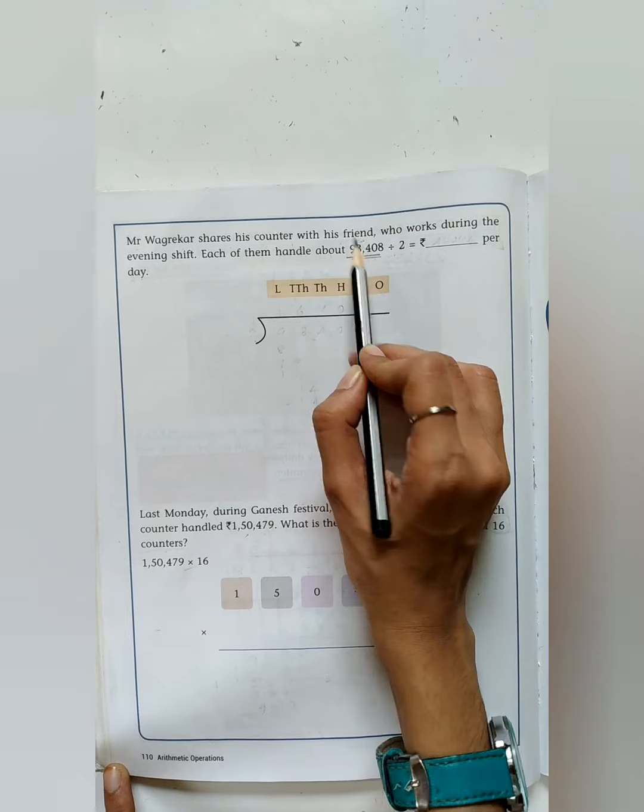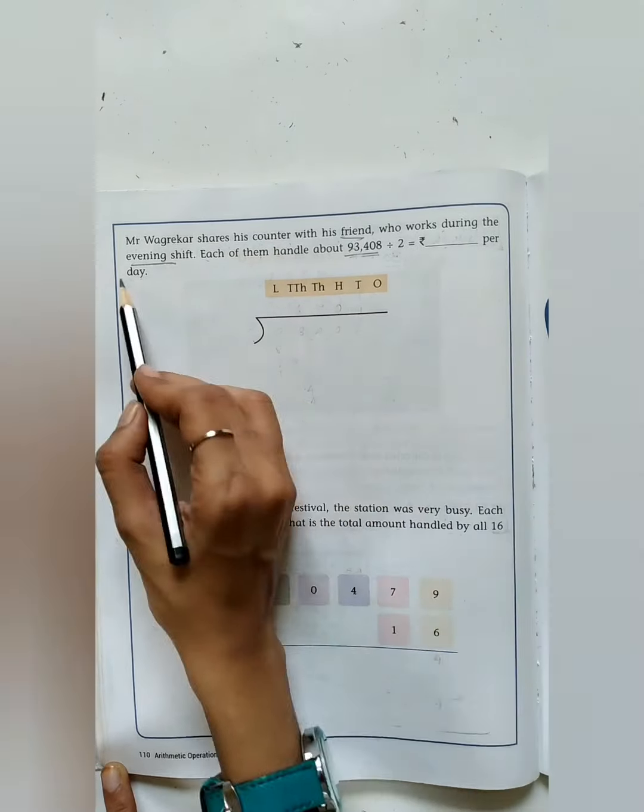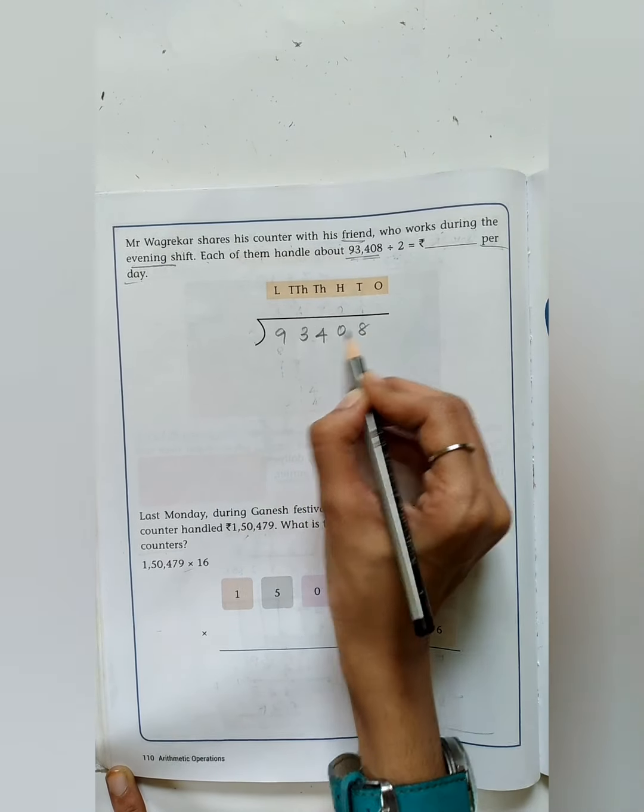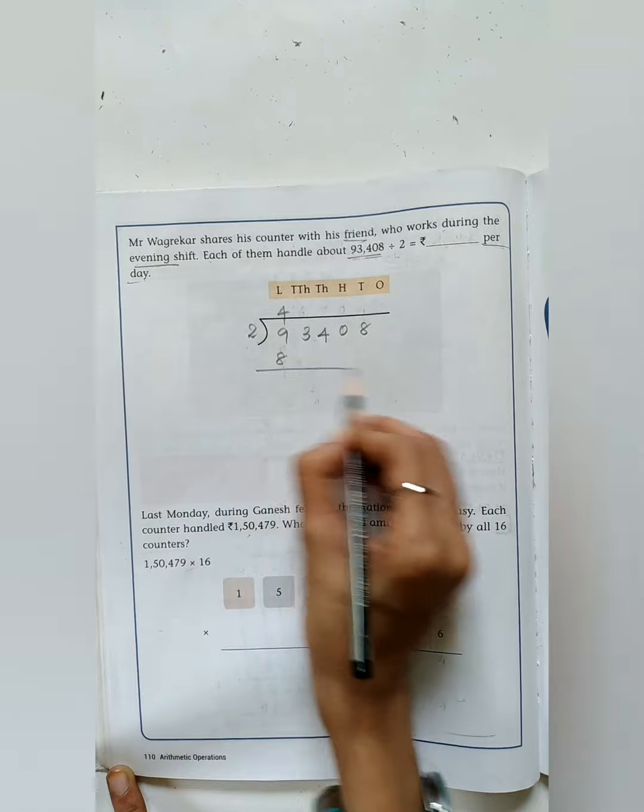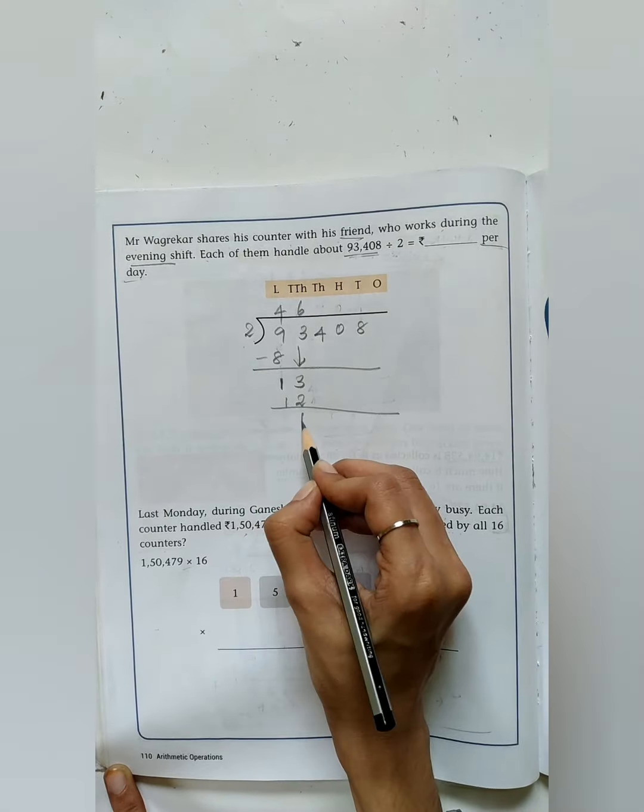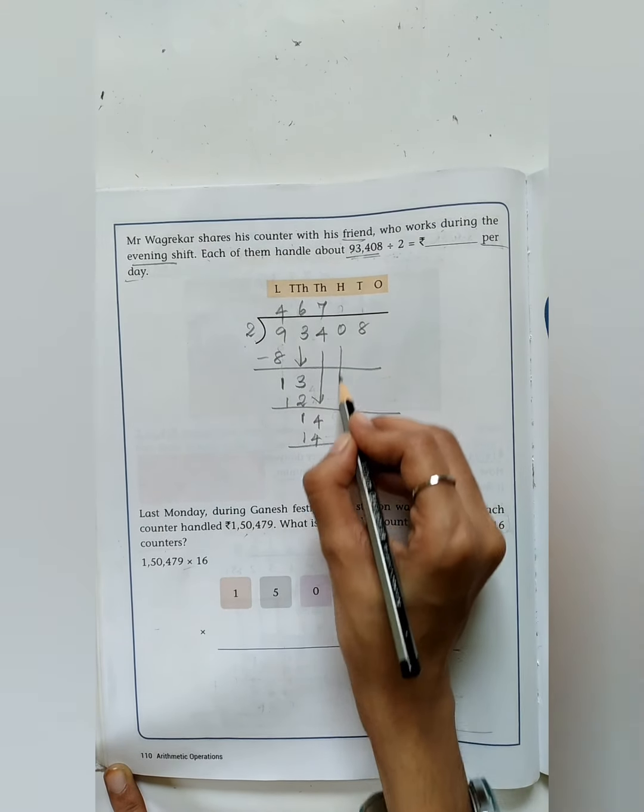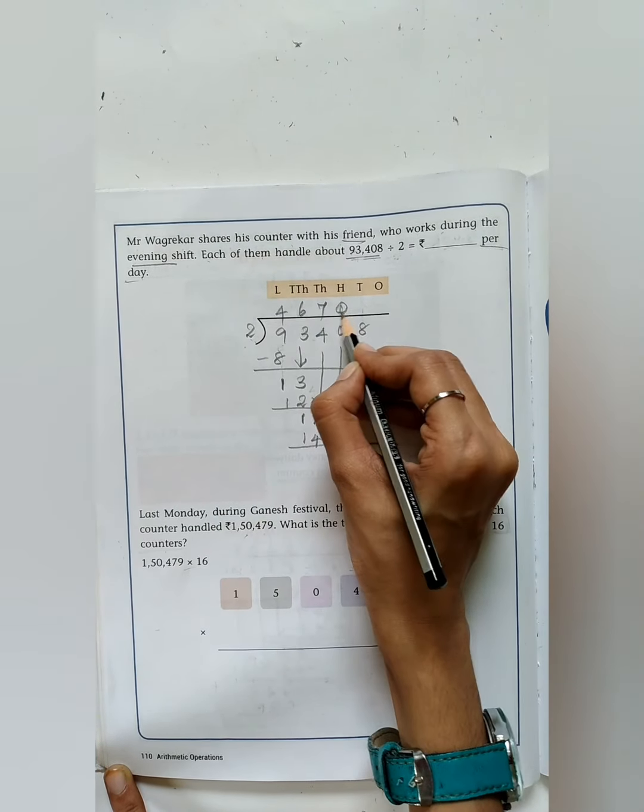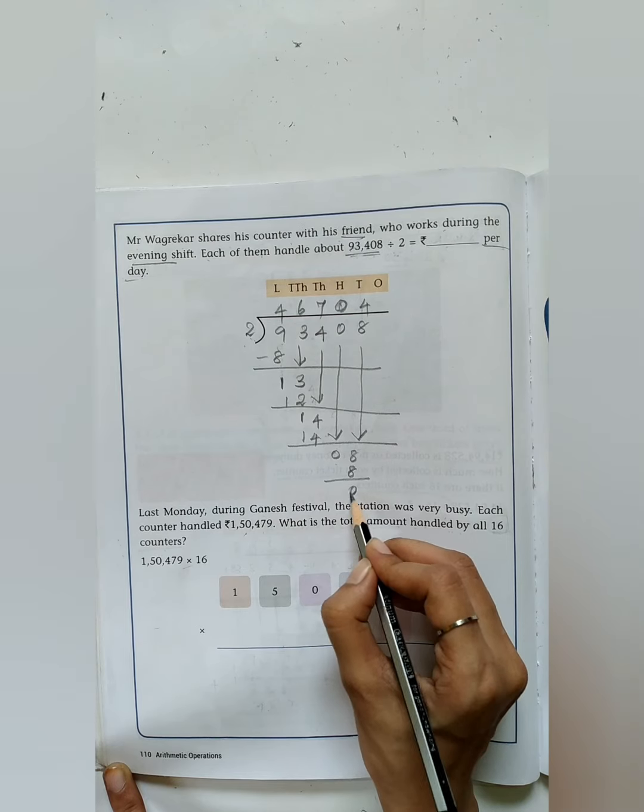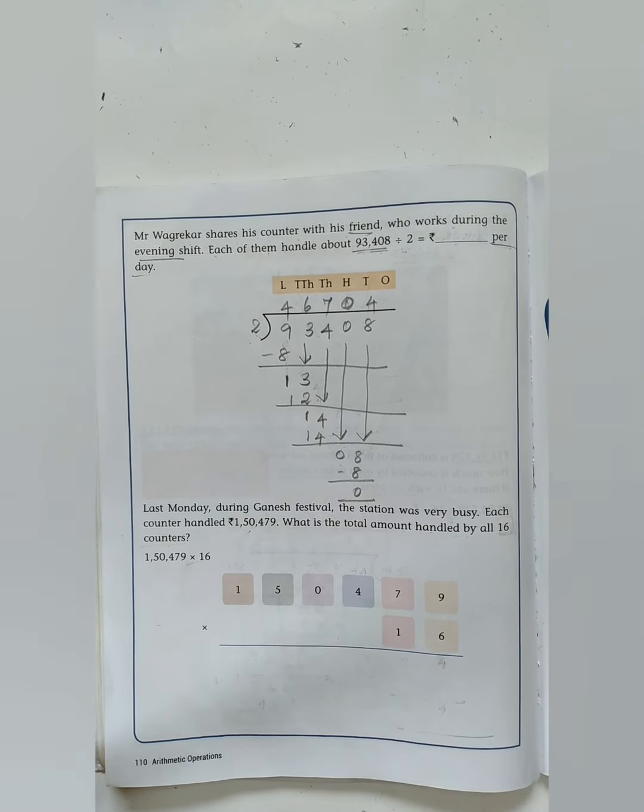Mr. Wagrikar shares his counter with his friend who works during the evening shift. Each of them handle about 93,408. It's divided among 2 persons. First write down the dividend in the place. 93,408 divided by 2. 4 2's are 8. 9 minus 8 is 1. Then bring down 3. 6 2's are 12. After subtraction the answer is 1. Bring down 4. 7 2's are 14. Bring down 0 again. 0 is less than 2, so put 0 in the quotient place. Bring down 8. 4 2's are 8. The answer is 46,704. Write the answer in the dash. Next question is for your self-work.